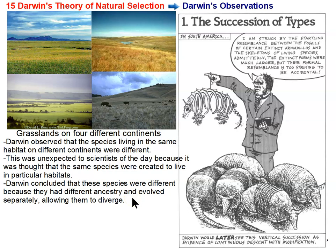Diverge just means becoming different from each other. Because they are not closely related and they've evolved separately for a long time, they have become different from each other — they have diverged. That's short for divergent evolution.